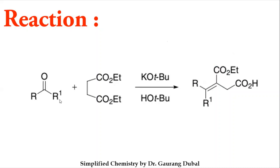You can take R-CO-R₁: if you put one H at R₁, it forms an aldehyde; if both R and R₁ are carbon groups, it is a ketone. This carbonyl compound reacts with diethyl succinate in the presence of potassium tert-butoxide as a base, and you get a product that is one type of aldol condensation application — specifically, you get an acid.